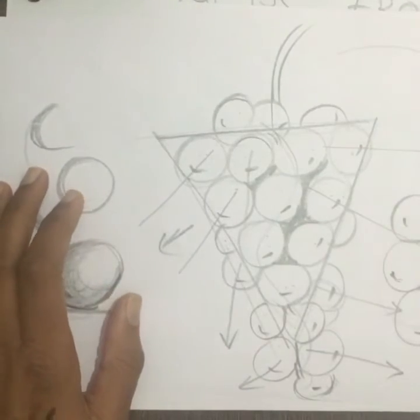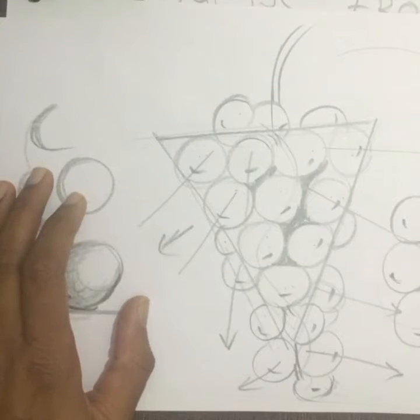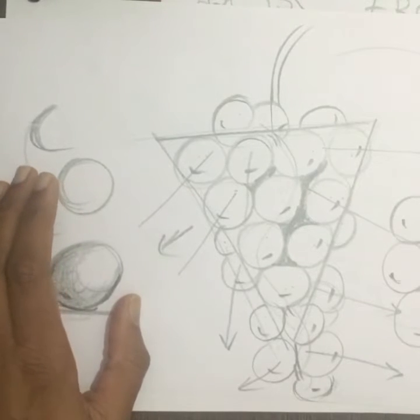Each and every grape directs to different directions. You have to follow the directions and the shades - where they come from.